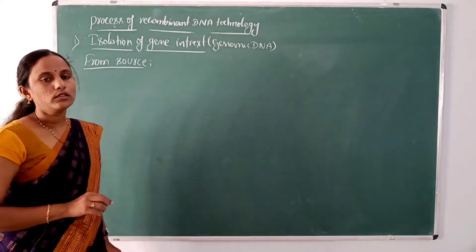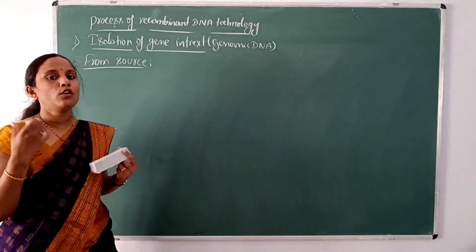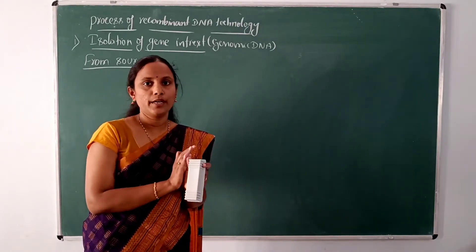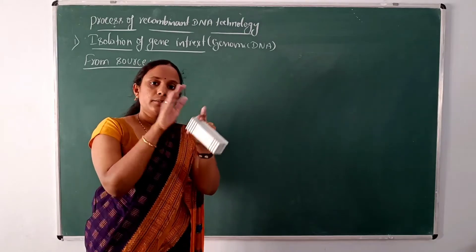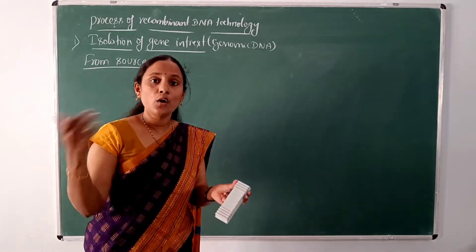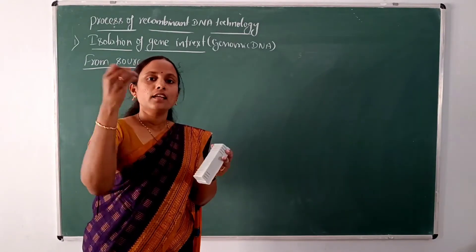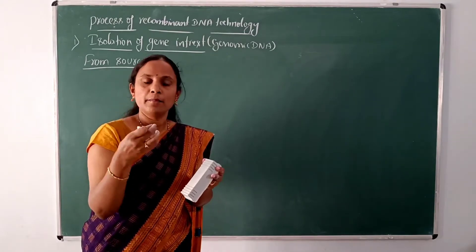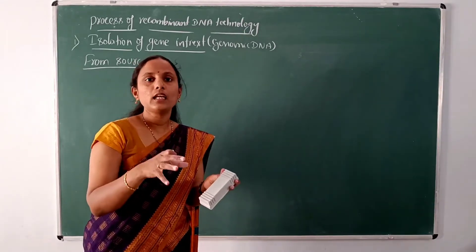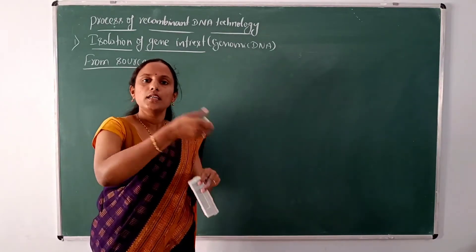Firstly, depending upon the type of cell we are using, every cell will not have the DNA exposed. It will be well protected in the nucleus in the case of eukaryotes, and it will be protected by the plasma membrane and by the cell wall. So, in order to extract that DNA out, we need to remove these contents — the cell wall and plasma membrane. Then inside the cell, there are macromolecules like proteins, lipids, and other nucleotides like RNA — they are all present and should be removed to get DNA in a pure form.